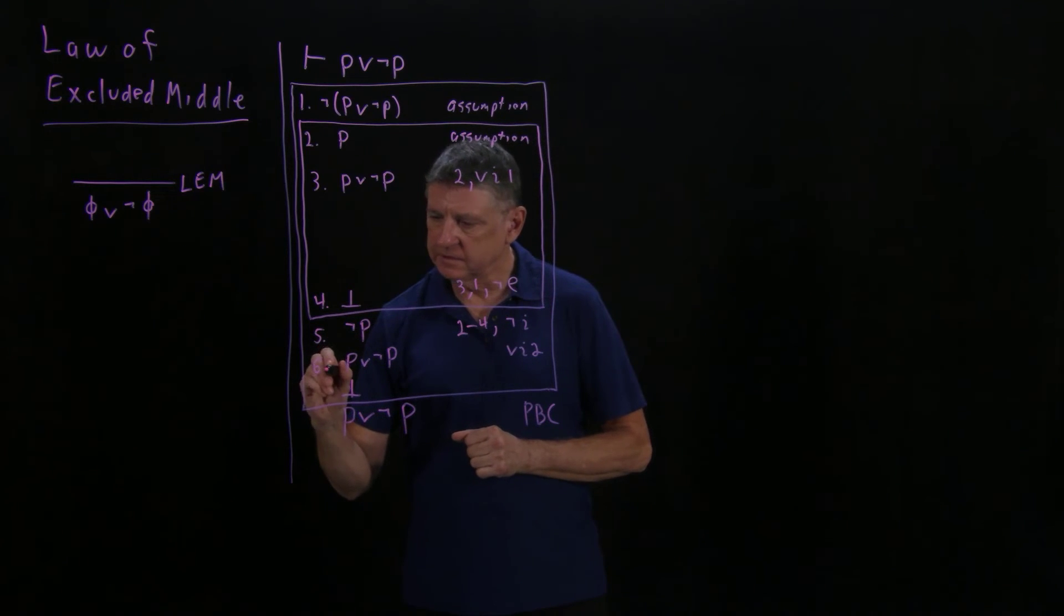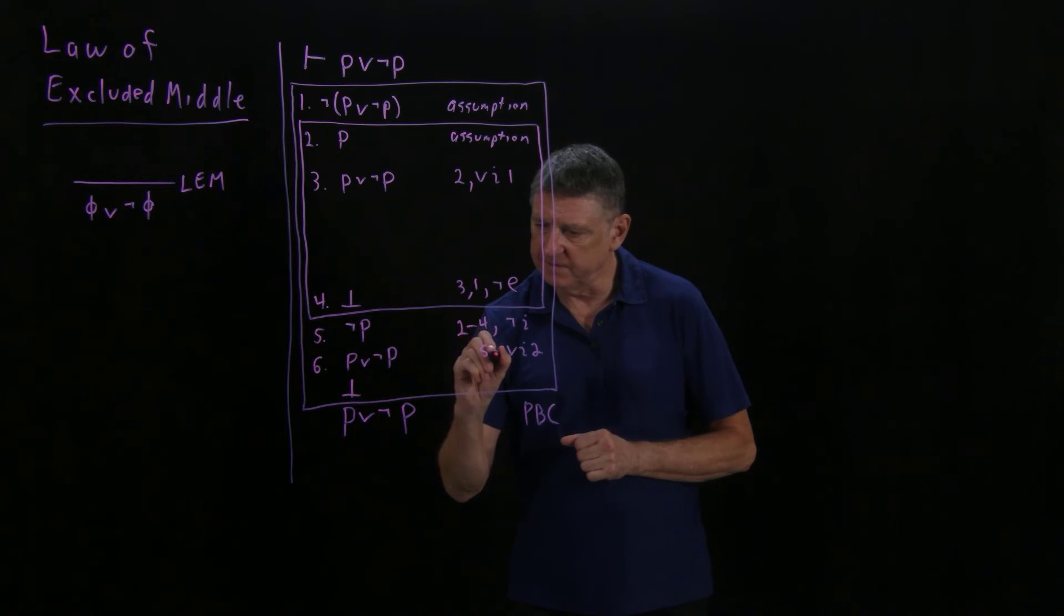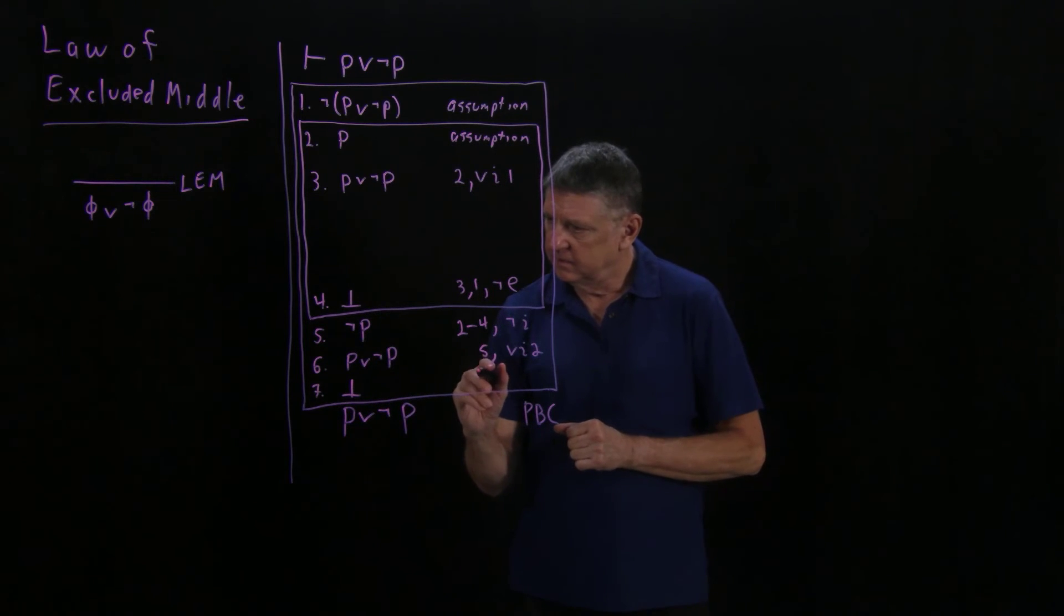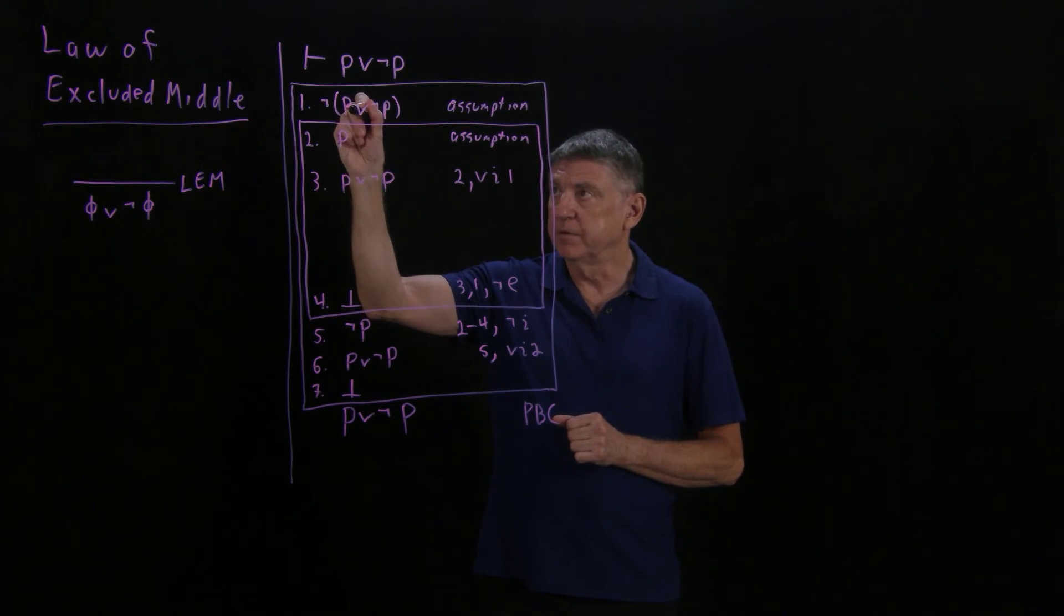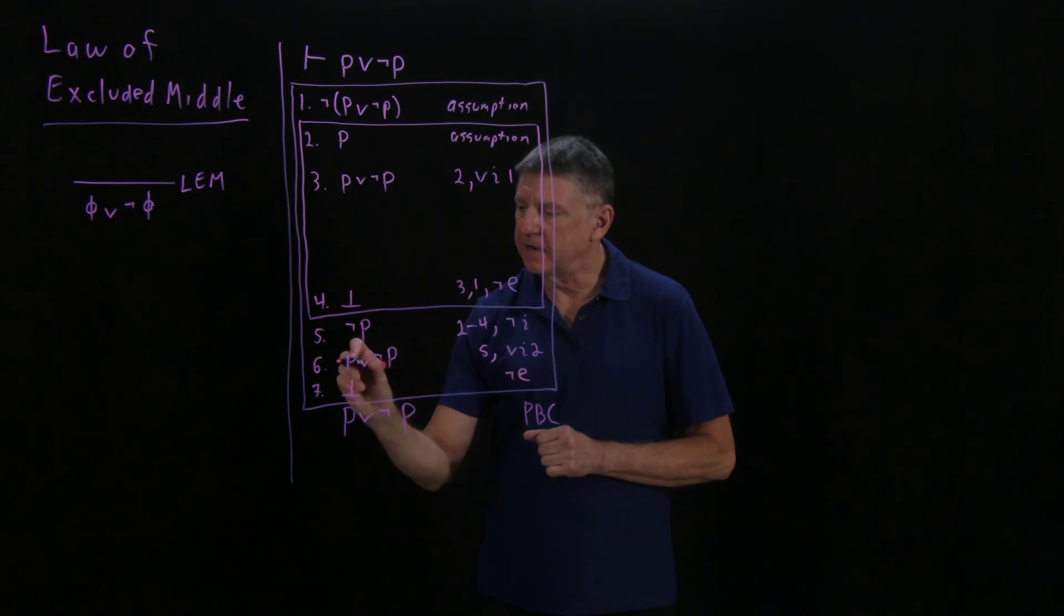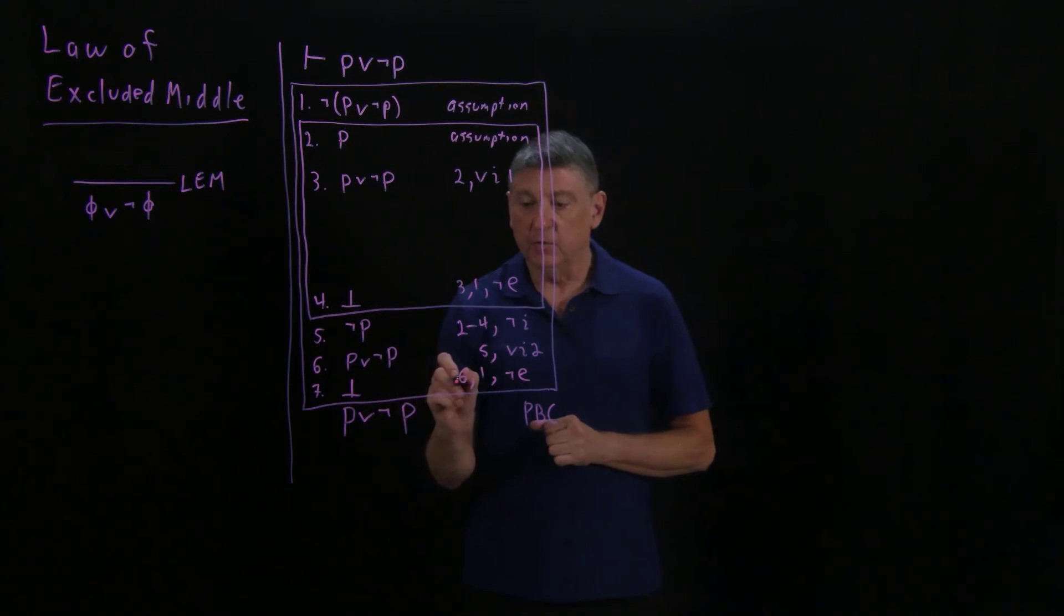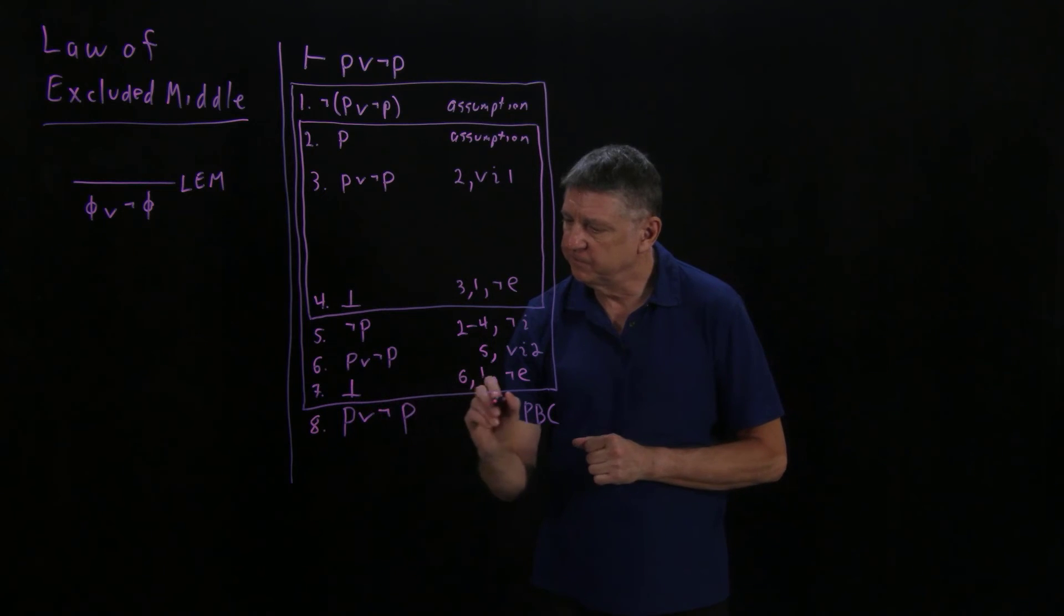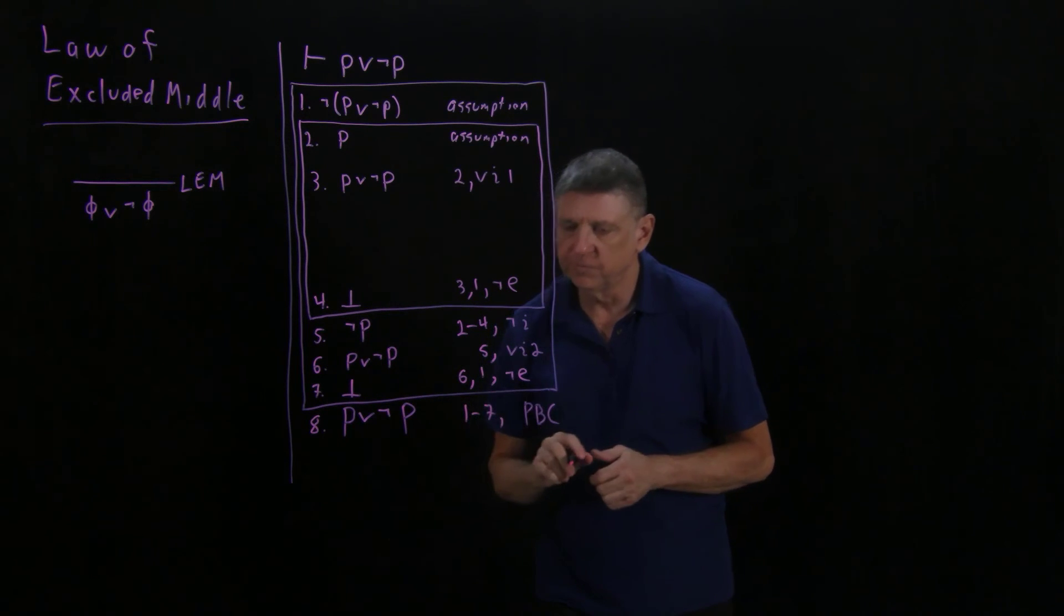This is now line 6. And it comes from disjunction-introduction type 2 of the preceding line, which is 5. This is now line 7. And it is arrived at by removing this negation. So that is negation elimination. And I've used the positive form is line 6, the negative form is line 1. I've now completed this box. I can now assign a number to this, which is 8. And the reason for writing it is the reasoning that begins at line 1 and ends at line 7. 1 through 7. Proof by contradiction. And my proof is now complete.